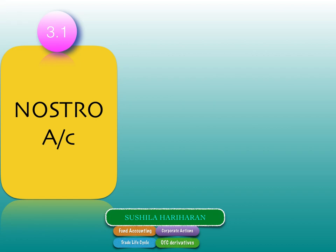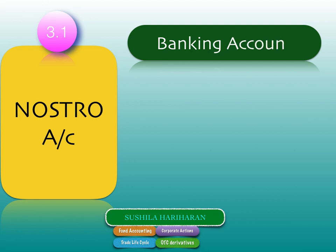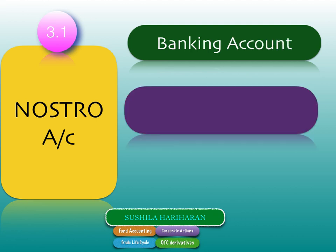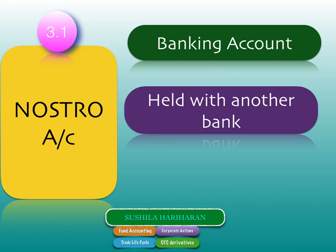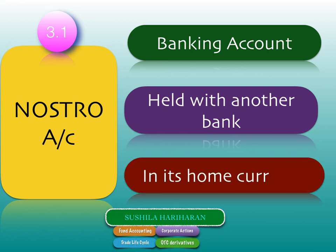Now we come to understanding what Nostro accounts are. A Nostro account literally means 'my account with you.' It is the banking account which banks hold with other banks in that other bank's home currency. For example, if two banks in India hold rupee accounts with each other within the RBI payment system, that is not called a Nostro account — it is a normal local clearing account involving multilateral netting.